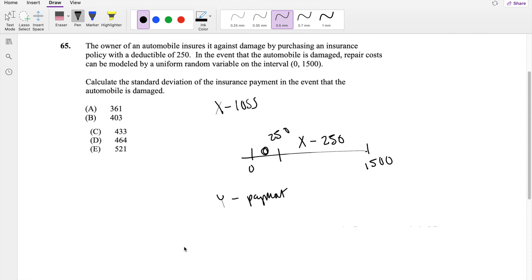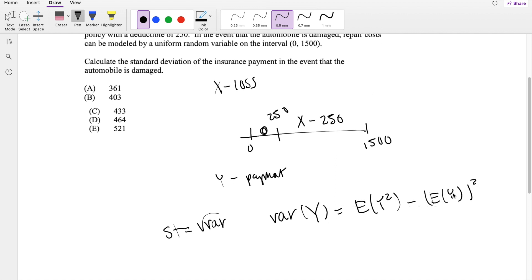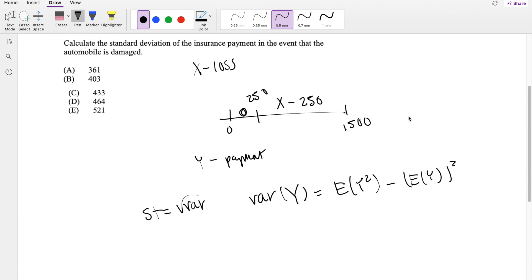And as always, we know that standard deviation is equal to the square root of variance, where variance formula of Y is equal to the expected value of Y squared, the second moment, minus the first moment squared. So let's just dive right in. We have all the information we need.